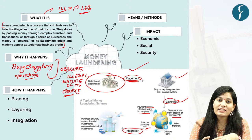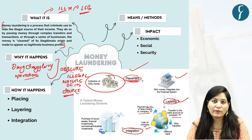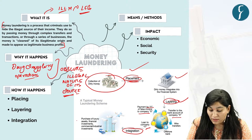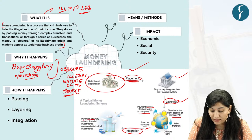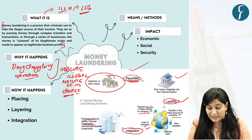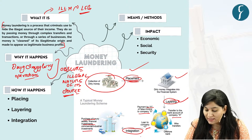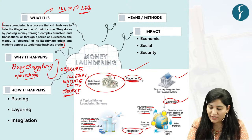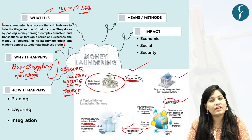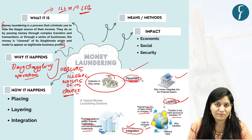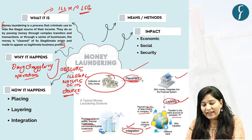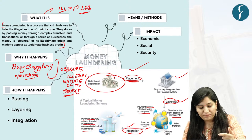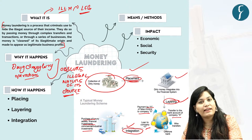Once money is converted into a legal form, the next step is to utilize this money freely in a legal way. This can be done with the help of purchasing luxury assets, financial investments, commercial and industrial investments. In this process you utilize that money freely and legally. This third process is known as integration. Now that money is part of the legal system. So the three phases are: placement, layering, and integration.